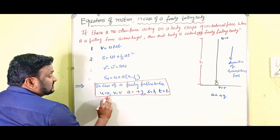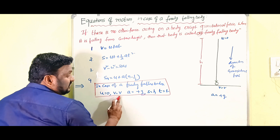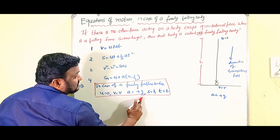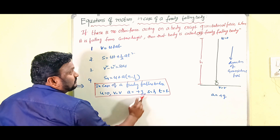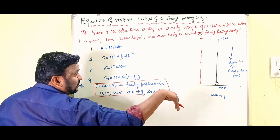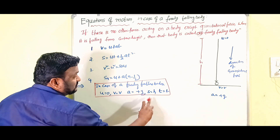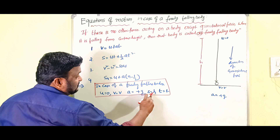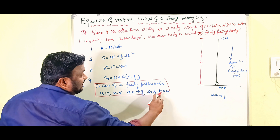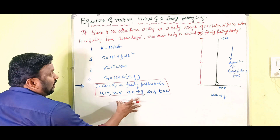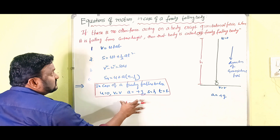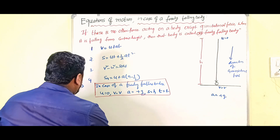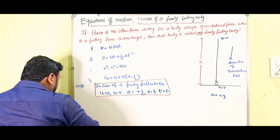So in case of a freely falling body: initial velocity is 0, final velocity is v, a is equal to plus g because the body is coming in the direction of gravitational force, distance travelled is the height — so s equals h — and t is equal to t. Now we substitute these values into the equations to get the equations of motion.